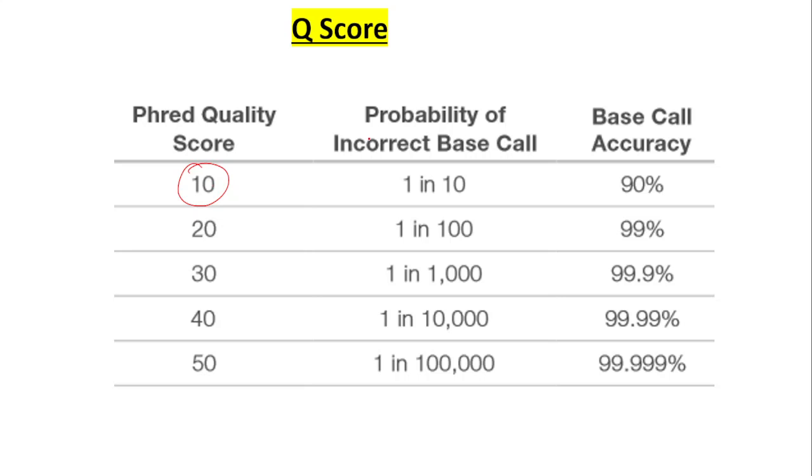So if Phred assigns a Q score of 10, that means the probability of an incorrect base call is 1 in 10, which means base call accuracy is 90%. If Phred assigns a quality score of 20, that means the probability of an incorrect base call is 1 in 100.